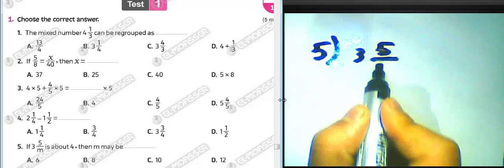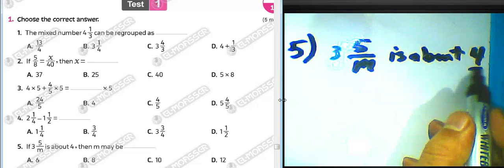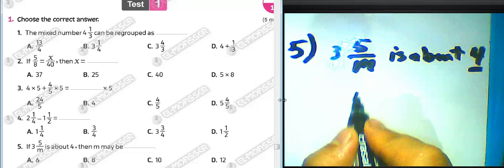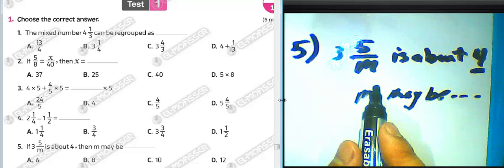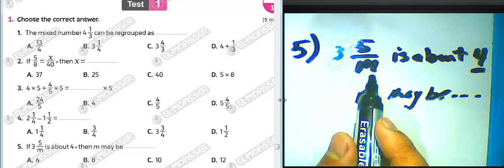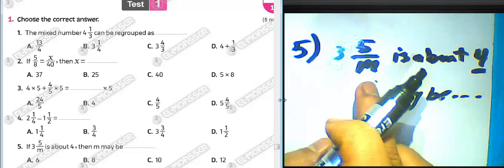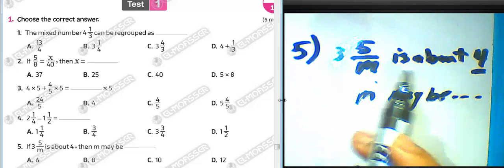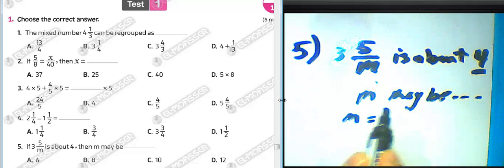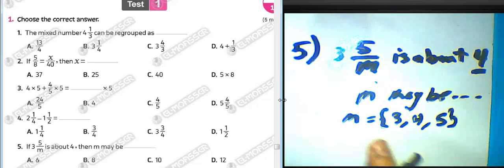Question number five: if three and five over m is approximately equal to four, then m might equal what? It's about rounding to the nearest whole number. Five must be more than half of m. We know half of five is two point five, so m must equal three, four, or five.